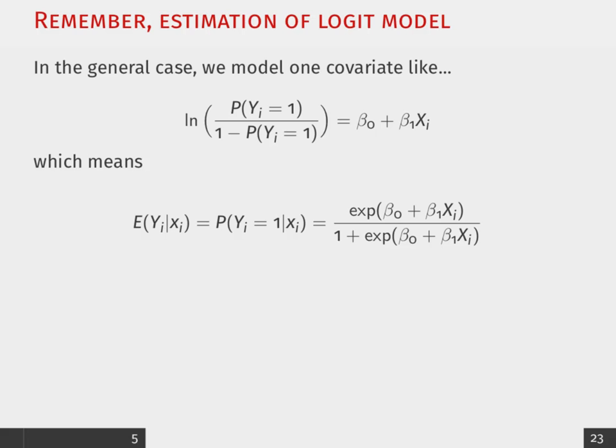this means that we're going to transform the estimated coefficients such as this, where in our numerator, we're taking the exponentiated addition of the intercept plus the estimated beta times whatever that X value is